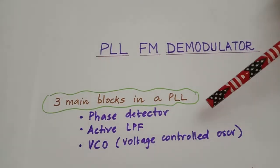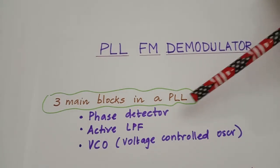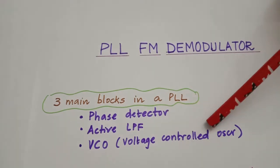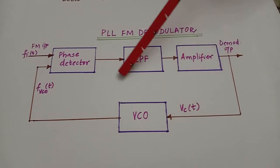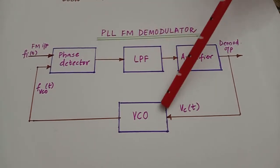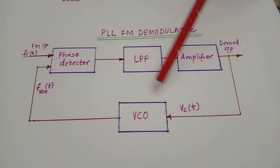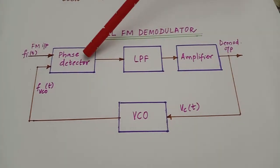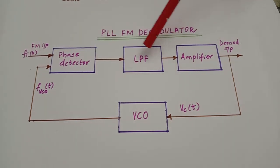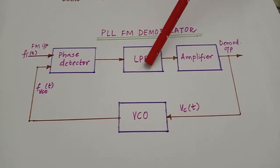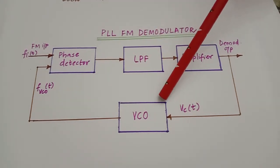A PLL consists of mainly three blocks: a phase detector, an active low-pass filter, and a voltage controlled oscillator. This block diagram shows the three main components of a PLL. In the PLL FM demodulator circuit you can find these three major blocks — the phase detector, the active low-pass filter (which is a low-pass filter with an amplifier), and the voltage controlled oscillator.